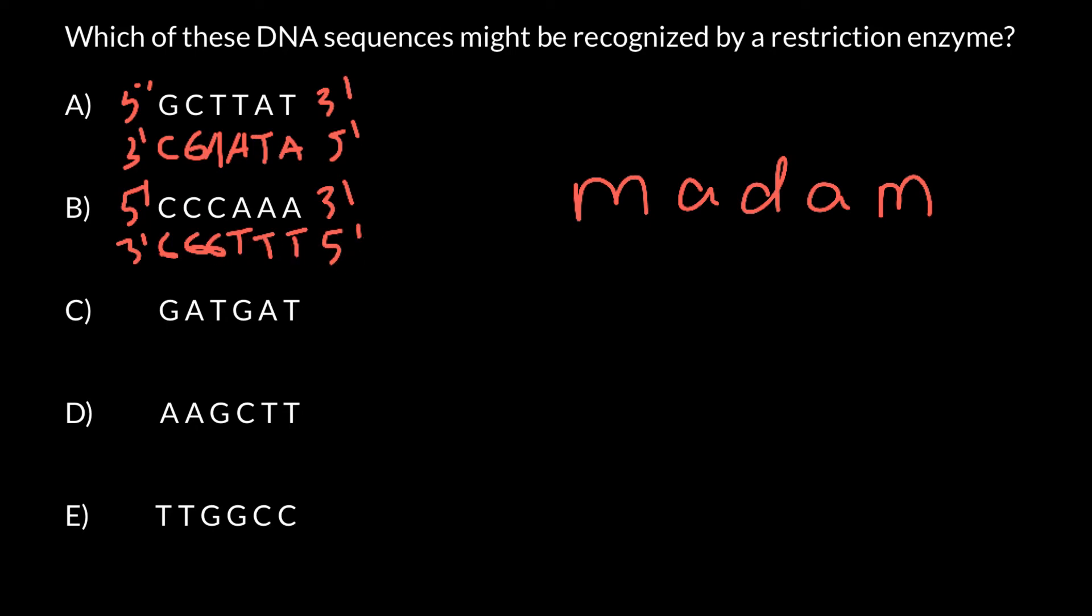Let's check another one. Again, let's put five prime here, three prime here. Here we have ATC, ATC, five prime here and three prime here. Again, the sequence is different, so top strand and bottom strand are different.